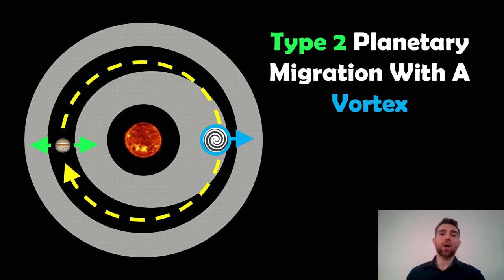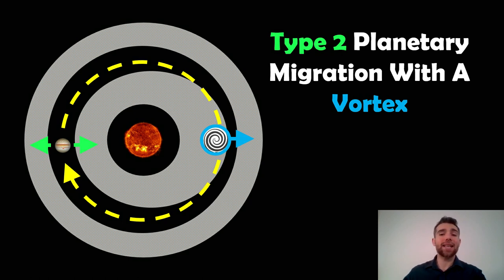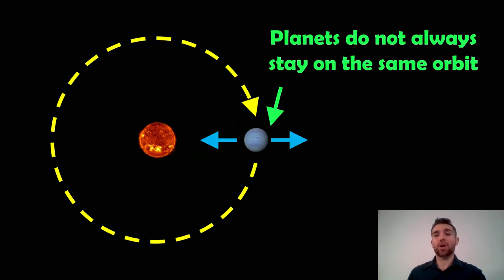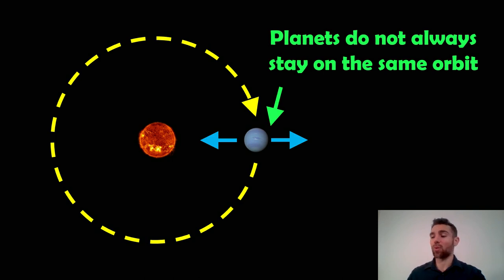Welcome to this video. In this video I wanted to go back to planetary migration in a disk, but also have a look at type 2 migration where it can actually interact with a vortex, which is more like type 3, so you can actually get a combination of the two. Just to recap: planets don't always stay where they form — as they're forming they can actually move in and out on their orbit, and this is called planetary migration.